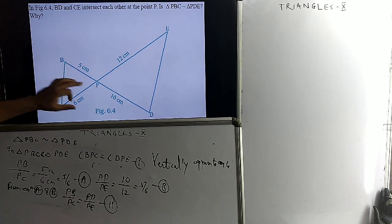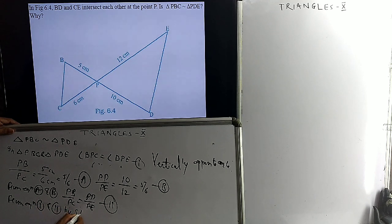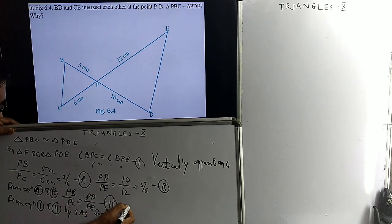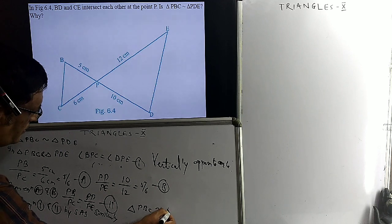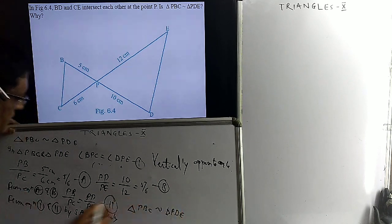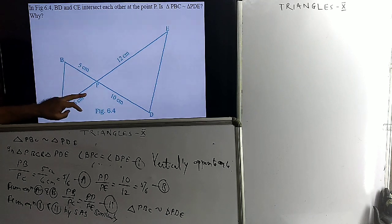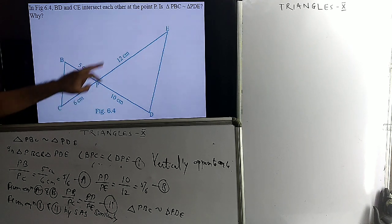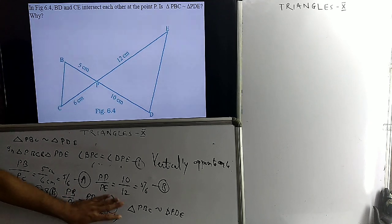Equation number 1 and equation number 2 together give the SAS similarity condition. By SAS similarity condition, triangle PBC is similar to triangle PDE. The SAS similarity condition requires the ratio of two corresponding sides to be equal and the included angle to be equal — which is satisfied here by the equal ratios and the vertically opposite angles.